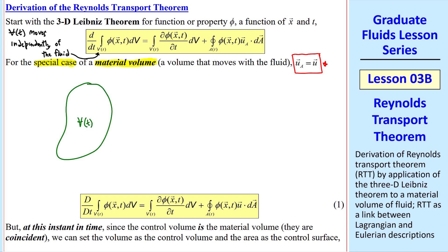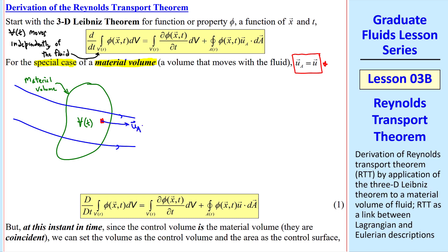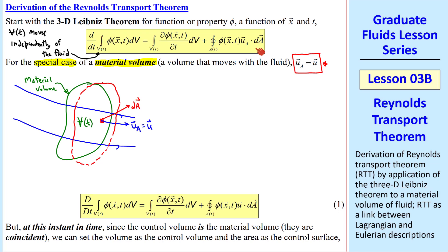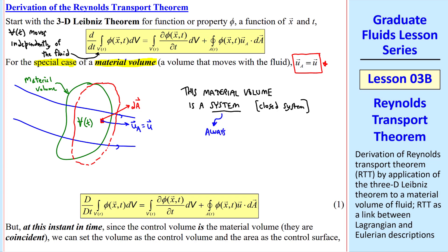If this is our initial volume — or potato — which is now a material volume, and it's in a flow field where these are streamlines, so it's some surface element, the velocity of that surface element is also equal to the velocity of the fluid at that point. So as this blob of fluid moves and perhaps distorts, it moves everywhere with the flow. And dA in this integral is the outward normal vector. This material volume is a system — some people call it a closed system — which by definition always contains the same mass.